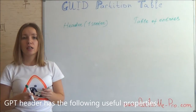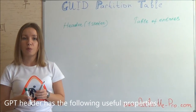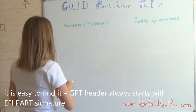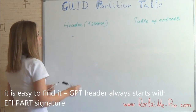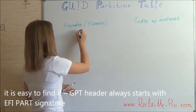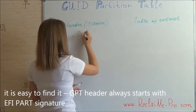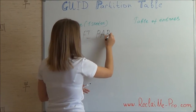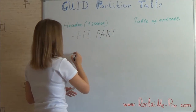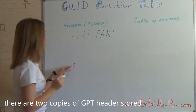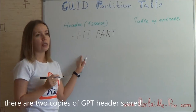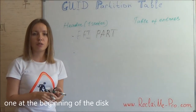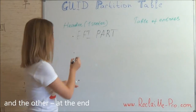The GPT header has the following useful properties. It is easy to find because the GPT header always starts with the EFI PART signature. There are two copies of the GPT header: one stored at the beginning of the disk and the other at the end.